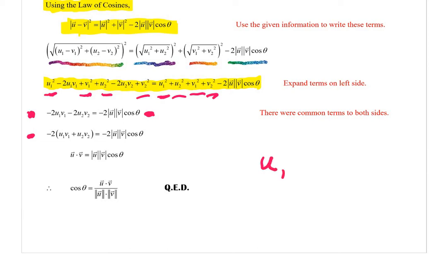The components, u1, v1, plus u2, v2, that actually is the definition of the dot product of these two, two-dimensional vectors. That is dot product.